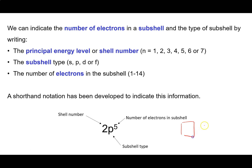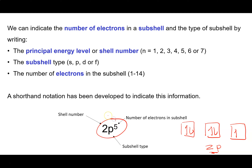I can write an orbital diagram for that: a p subshell has three orbitals, so I draw three boxes and place five electrons according to Hund's rule and the Pauli exclusion principle — first electron goes spin up, then one to each orbital, then begin pairing. The orbital diagram tells you about electron spin, which the simple notation does not.